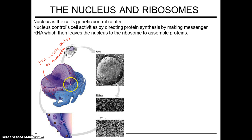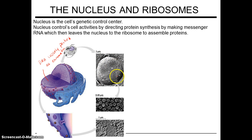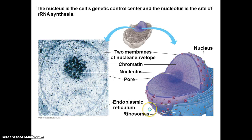Continuous with this nuclear envelope is a membrane, and this series of membranes is called endoplasmic reticulum. This endoplasmic reticulum has these ribosomes. Here's a picture under the microscope — here's a nucleus, and here's a closer picture of the nuclear pore. The nucleus is the cell's genetic control center, and the nucleolus is the site of ribosomal RNA synthesis. This is how it looks under the electron microscope.